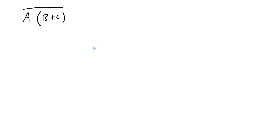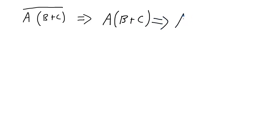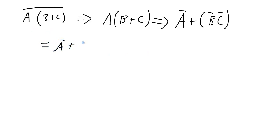Here's another example using process one. First, I complement the function, giving A and B or C — noting this is not yet equal to the original. Next, I change operations: ANDs to ORs and ORs to ANDs, giving A or B and C. Then I complement all variables: NOT A, NOT B, and NOT C. So the original expression equals NOT A OR NOT B ANDed with NOT C.